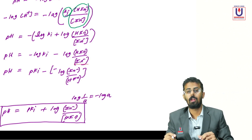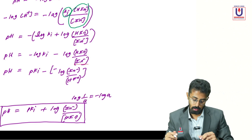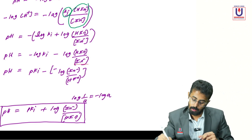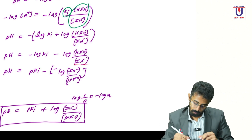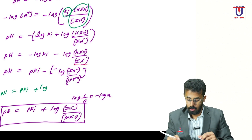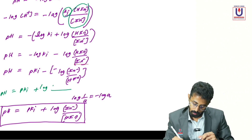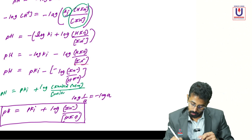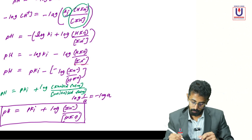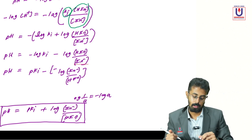This is the equation for calculating the pH of an acidic indicator. We can also write it as: pH = pKi + log(concentration of ionized form / concentration of un-ionized form).